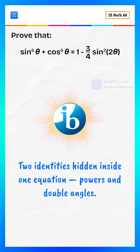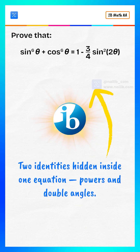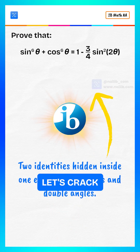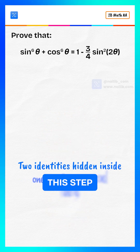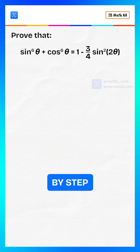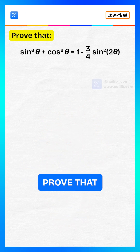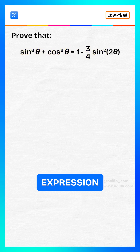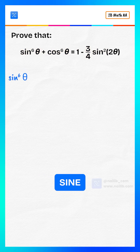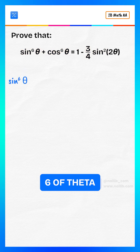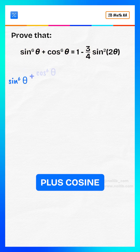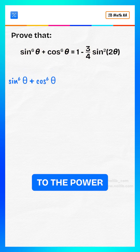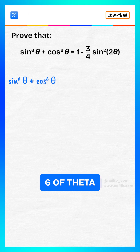Two identities hidden inside one equation — powers and double angles. Let's crack this step by step. We start with the expression sine to the power six of theta plus cosine to the power six of theta.